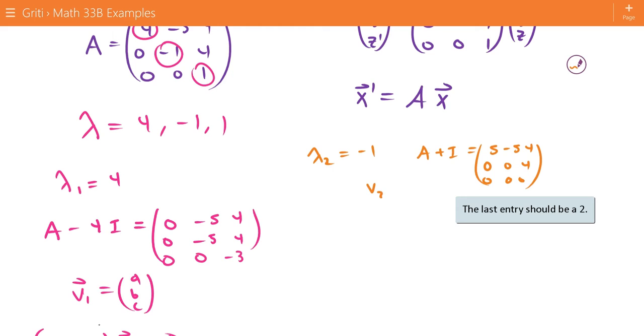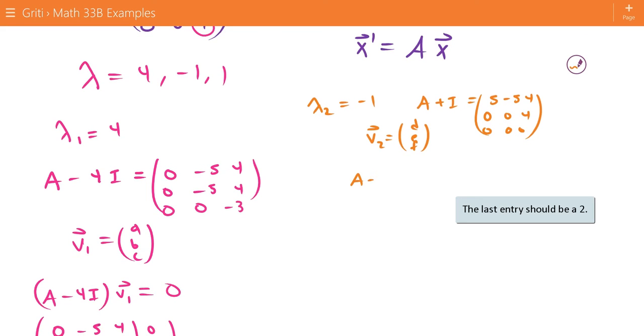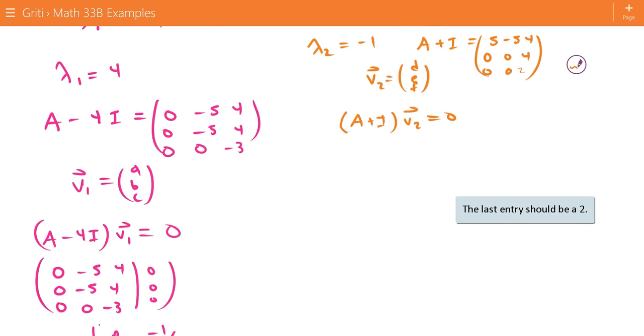We're trying to find a vector V2, which is equal to D, E, F, which satisfies A plus I times V2 equals 0. This gives us the augmented matrix 5, negative 5, 4, 0, 0, 4, and 0, 0, 2. And then on the right, 0, 0, 0.